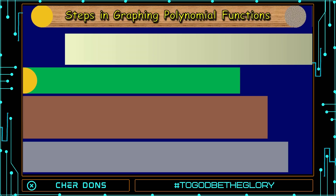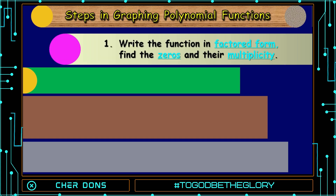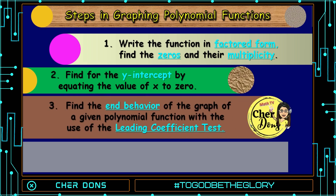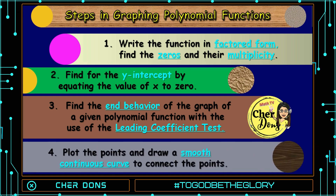There are steps to follow in graphing polynomial functions. Number 1: write the function in factored form, and find the zeros and their multiplicity using synthetic division. Number 2: find the y-intercept by equating the value of x to 0. The y-intercept is the intersection of its graph and the y-axis. Number 3: find the end behavior of the graph using the leading coefficient test. And for number 4: plot the points and draw a smooth continuous curve to connect the points.